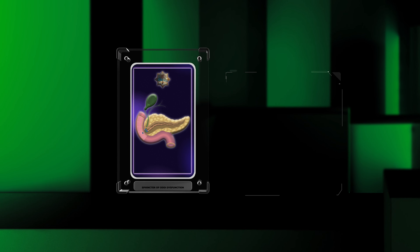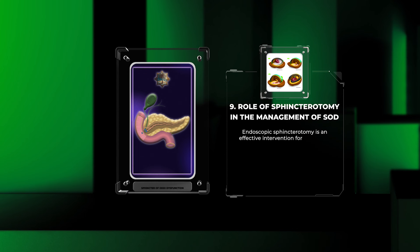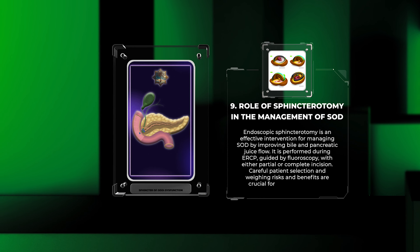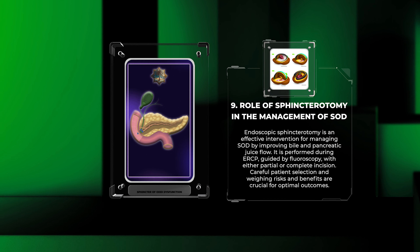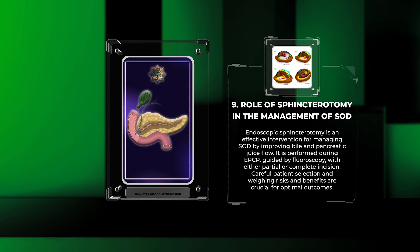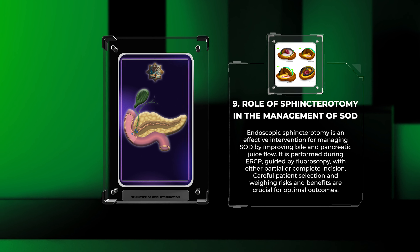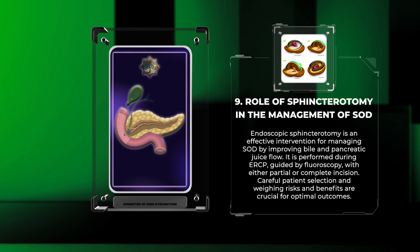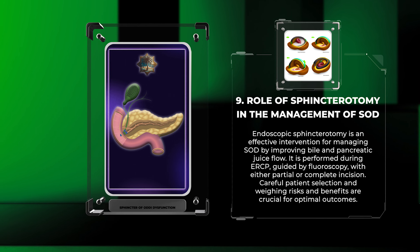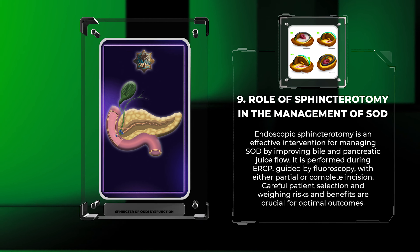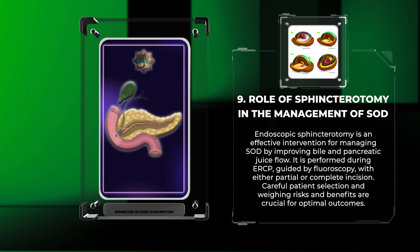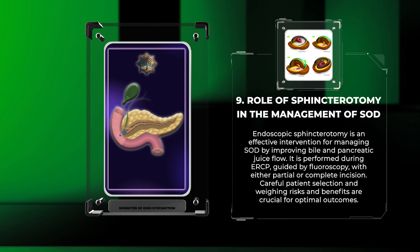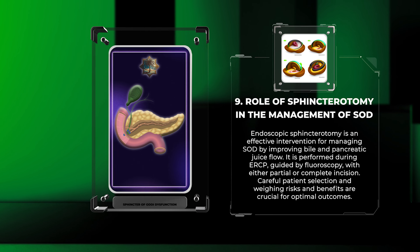Endoscopic sphincterotomy is an effective intervention for managing SOD by improving bile and pancreatic juice flow. It is performed during ERCP, guided by fluoroscopy, with either partial or complete incision. Careful patient selection and weighing risks and benefits are crucial for optimal outcomes.